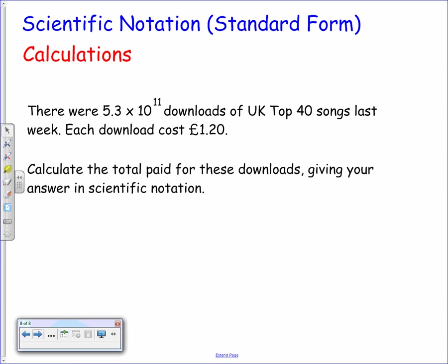Other things you may be asked to do with scientific notation is to carry out a calculation. For example: there were 5.3 × 10^11 downloads of the UK Top 40 songs last week, and each download costs £1.20. We need to calculate the total paid for these downloads, giving the answer in scientific notation. It's a fairly straightforward calculation — we multiply the number of downloads by the cost, so we have 5.3 × 10^11 multiplied by 1.20.